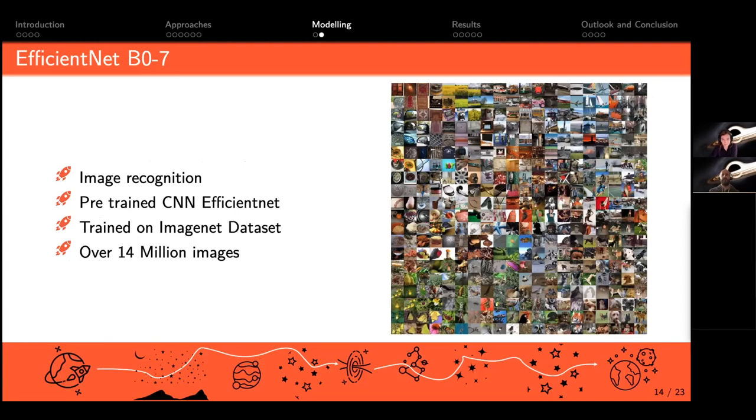We used a pre-trained convolutional neural network called EfficientNet. It's a network which was trained on the ImageNet dataset—you have a few examples on the right. The ImageNet dataset consists of over 14 million images.